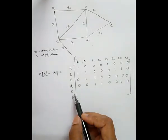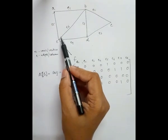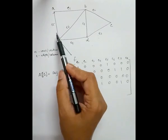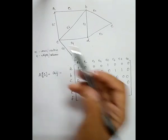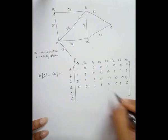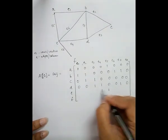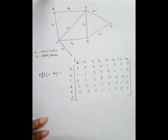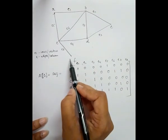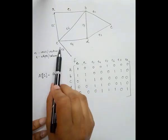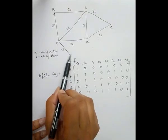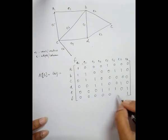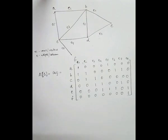Now consider vertex e. The degree of this vertex is four, meaning four edges are incident: e4, e5, e6, and e8. Therefore e4, e5, e6, and e8 have value one and the rest are zero. For the last vertex f, the degree is one, meaning only single edge e8 is incident on this vertex. Therefore e8 has value one and the rest remain zero.